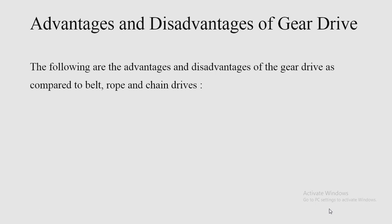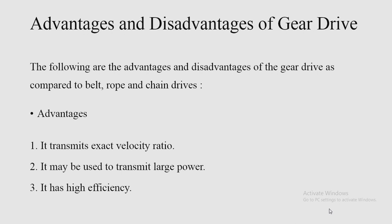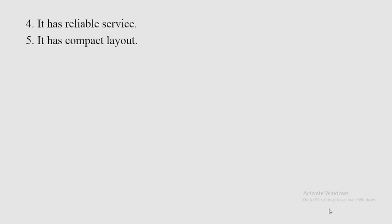The advantages of gear drive compared to belt drive, rope drive, and chain drive are: first, it transmits exact velocity ratio — there is no slipping. Second, it may be used to transmit large power, unlike friction wheels which can only transmit small power. Third, it has high efficiency because friction losses are minimum and slipping does not occur. Fourth, it has reliable service. Fifth, it has a compact layout.